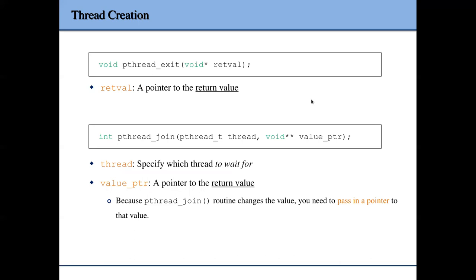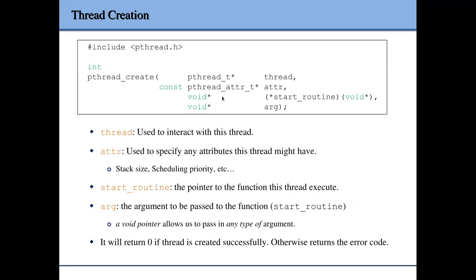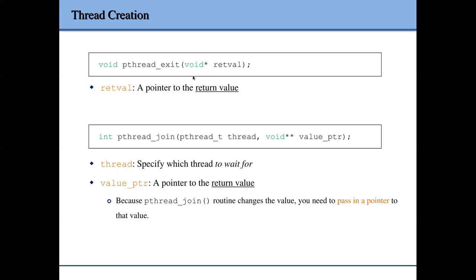After you create a thread, you can also exit from it by calling the pthread_exit function, which takes a void pointer argument. If you want to exit from the thread immediately and return a value, you call pthread_exit with the return value, which will be passed to the thread waiting for you to exit. If you don't call this function and just let the start routine return, the pthread library will internally call the exit function for you.